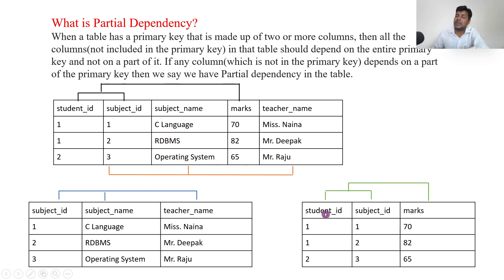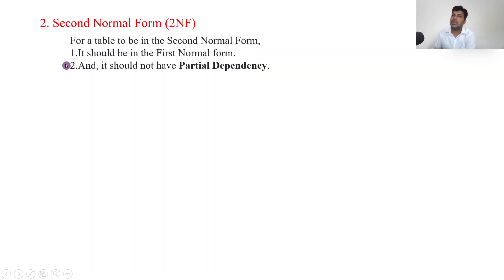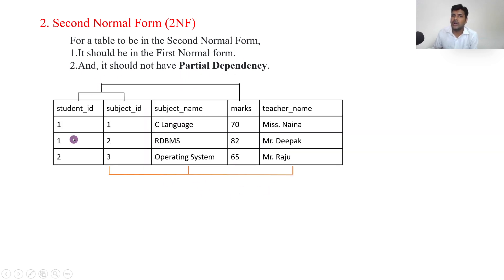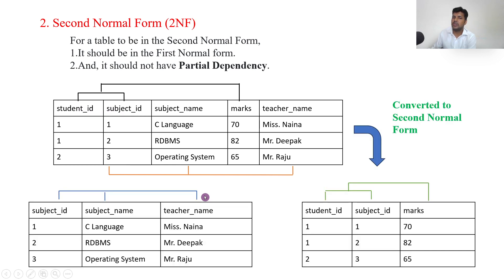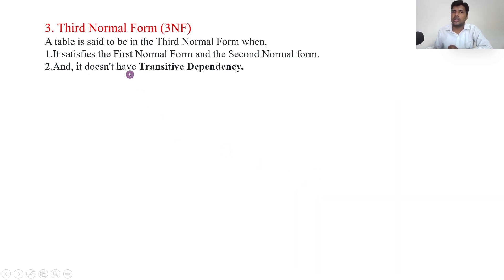So second normal form means: it should be in 1NF and it should not have partial dependency. By dividing the table into two parts and achieving fully functional dependency, we have converted it to second normal form. Removing partial dependency is called second normal form.